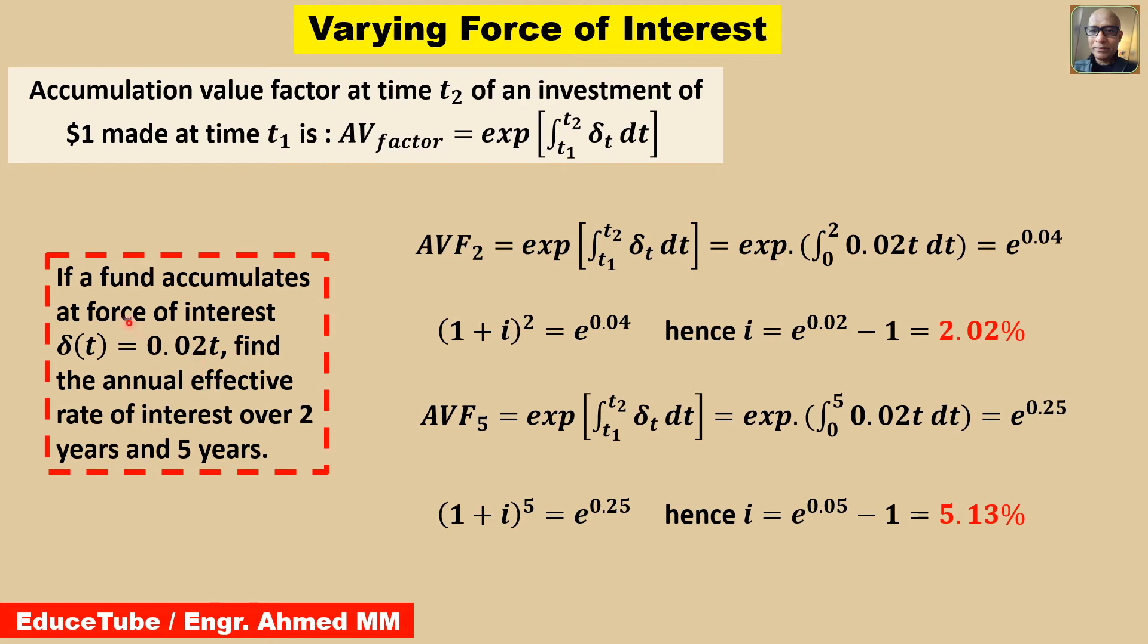Now solving this problem: if a fund accumulates at force of interest δ(t) = 0.02t, find the annual effective rate of interest over 2 years and 5 years. So accumulation value factor 2, we know the formula. Again we wrote here equal to t1 to t2. Our limit is 0 to 2 because it is 2 years. So 0 to 2 and δ(t) we know is 0.02t. Very easily doing integrations and putting the upper limit and lower limit value at an end, we will get e^0.04. And this e^0.04 we can write is equal to (1+i)^2 because it is for 2 years. Then we can find i = e^0.02 - 1, then 2.02%. So annual effective rate of interest over 2 years, it will be 2.02%.